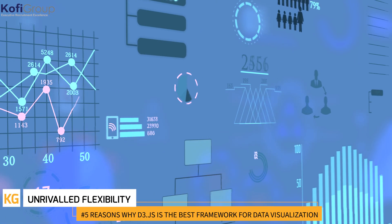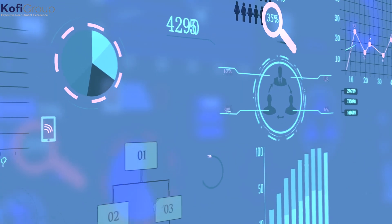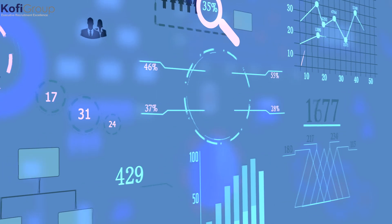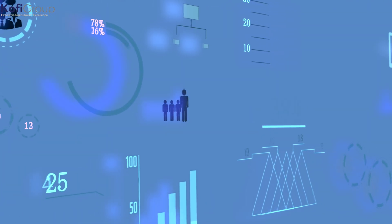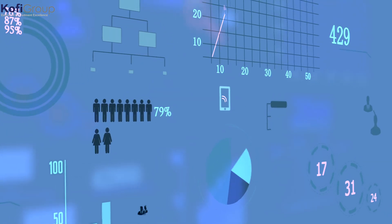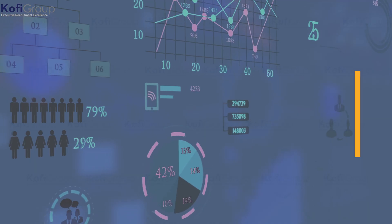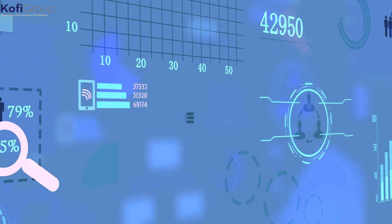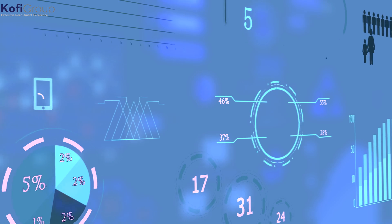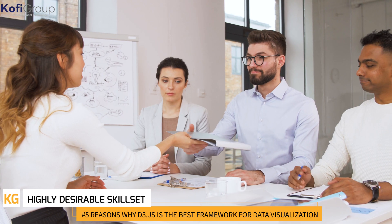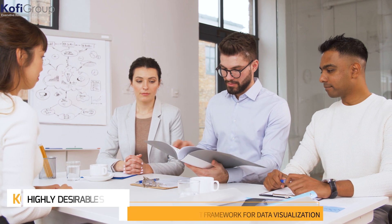Unrivaled flexibility: D3.js has the flexibility to display data pretty much however you want. Looking to plot out where LeBron James sinks buckets from, overlaid onto a representation of half a basketball court? It's been done — and the code is available on GitHub. The only limit is your imagination and your ability to manipulate D3.js to accomplish your vision. Because D3.js is so widely used and used for such a crazy variety of applications, it's quite the feather to have in your cap when looking for roles in the programming and development industries.